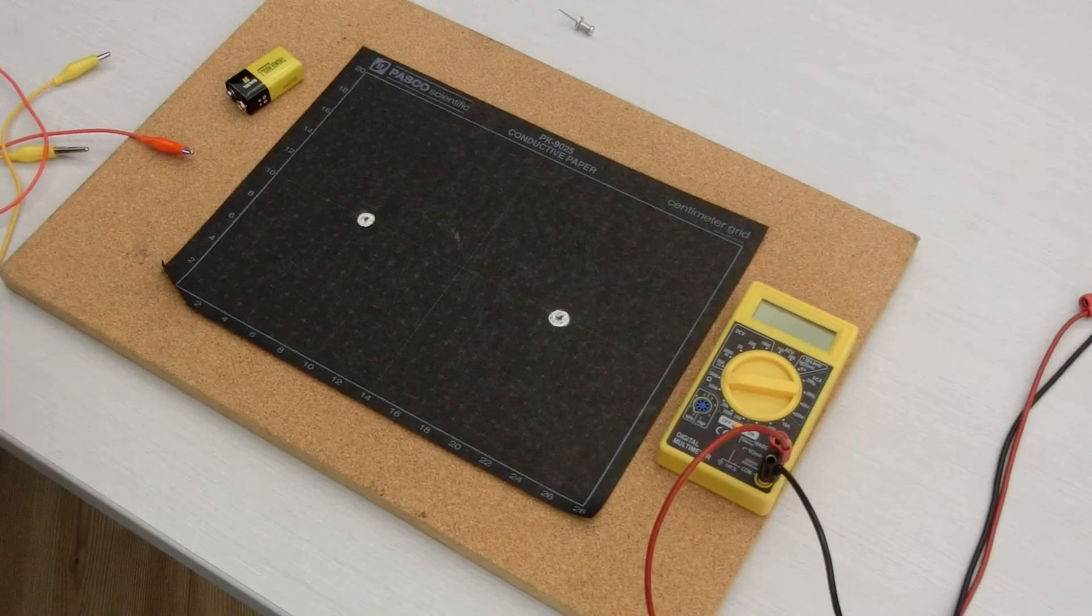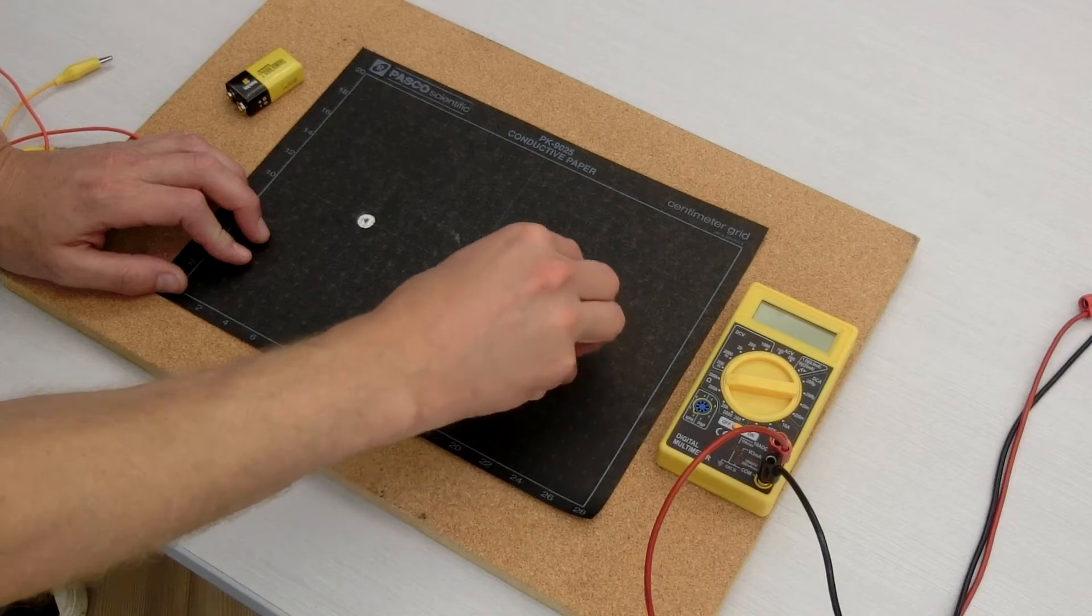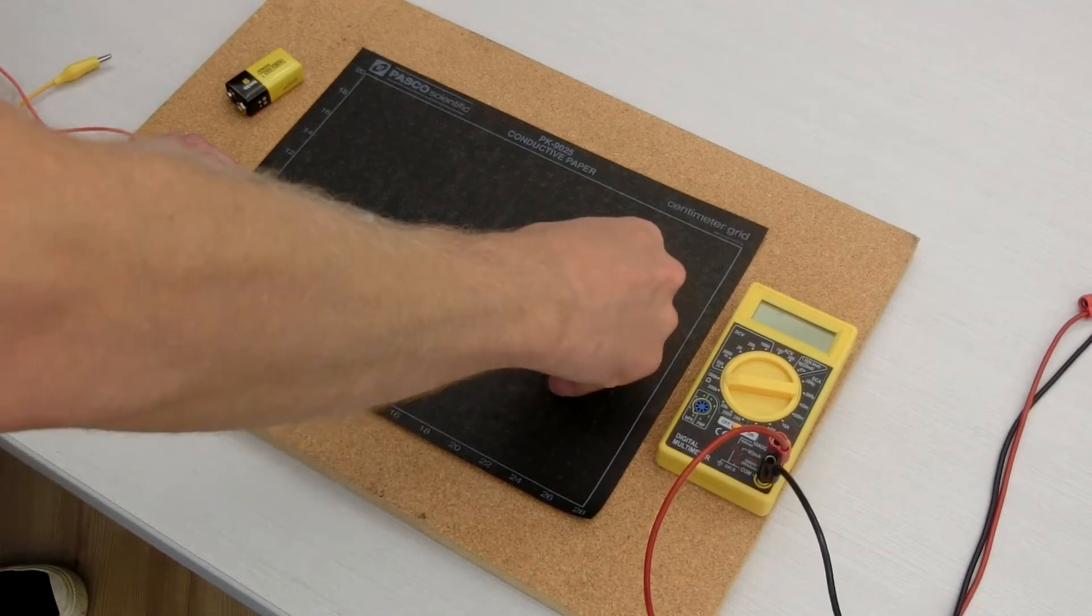In this experiment, you'll measure an electric field by using a multimeter to measure potential differences between different points in the field.